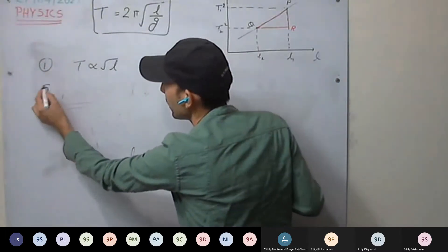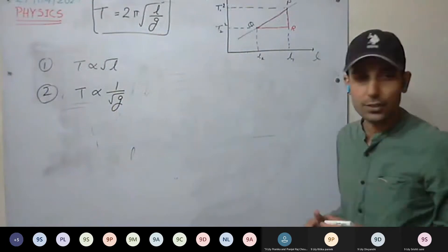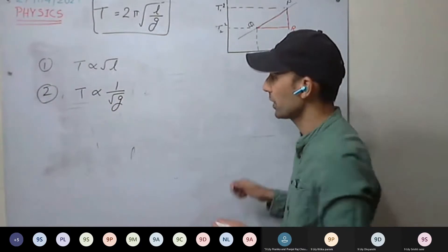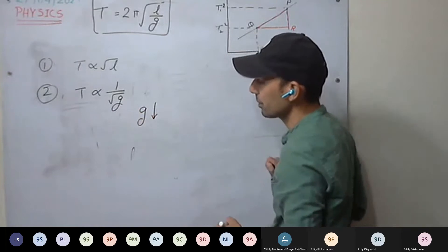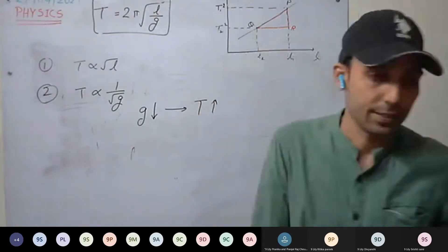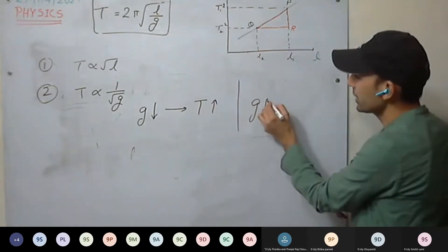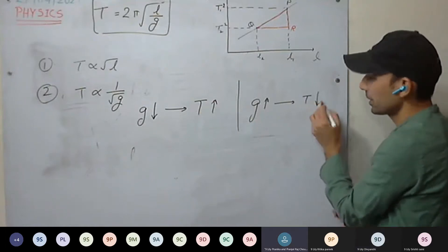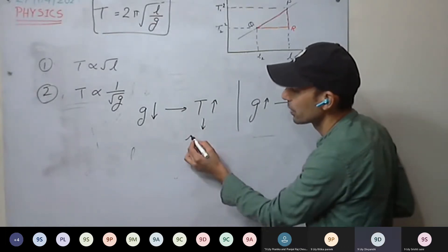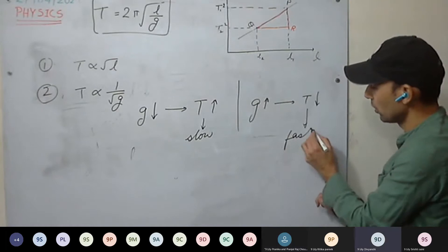How does time period vary with G? T is inversely proportional to √G. If gravity decreases, time period increases — clock goes slower. If gravity increases, time period decreases — clock goes faster.